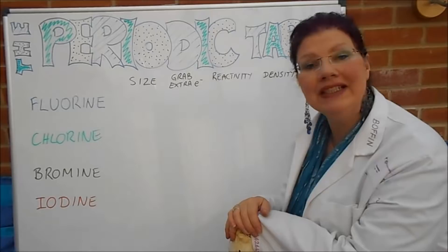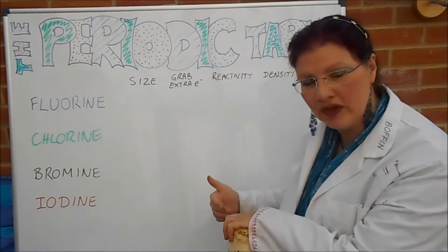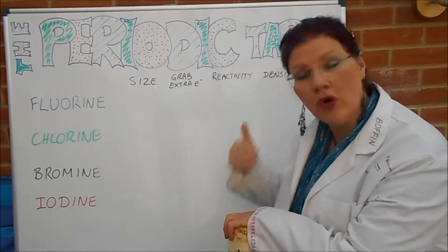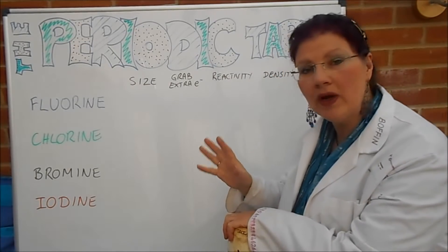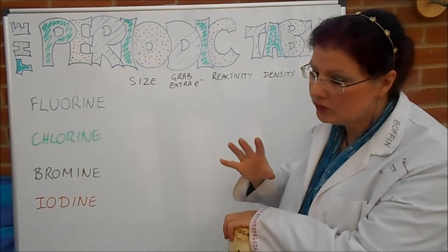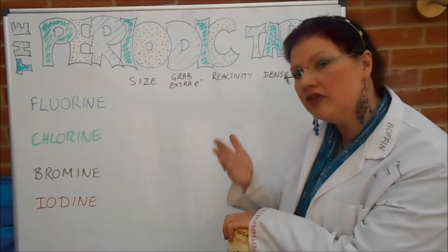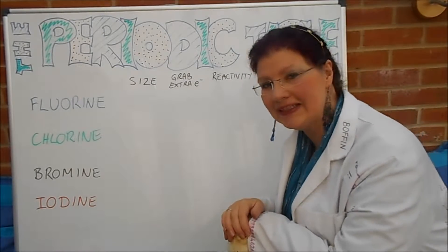Here we're talking about the tendencies as you go down the group. All the elements in the group are quite similar to each other and they will react in very similar ways. Some are more reactive, some are less reactive, some are denser, some are less dense and so on. We're going to talk about the tendencies of this group.